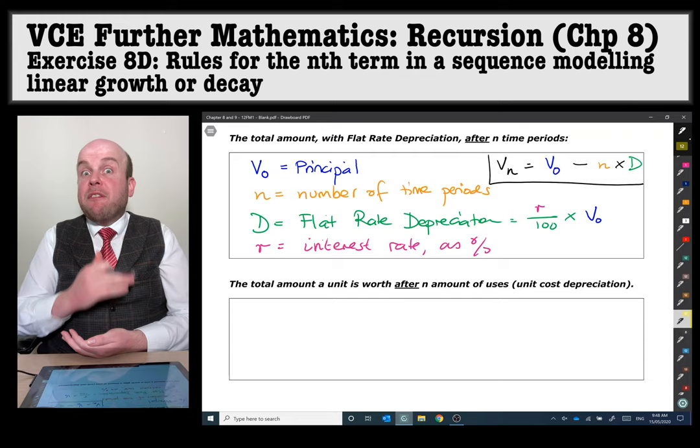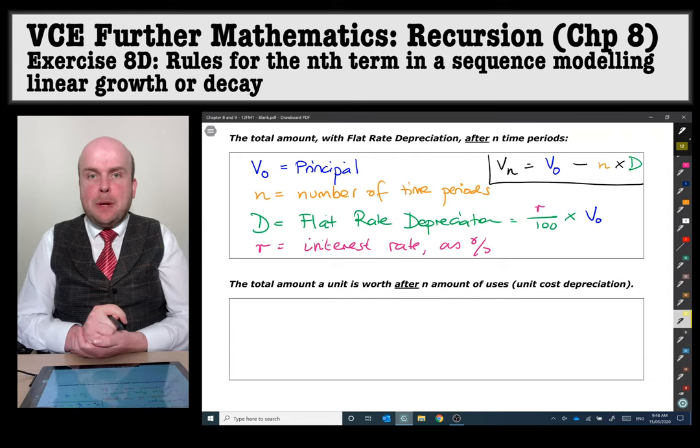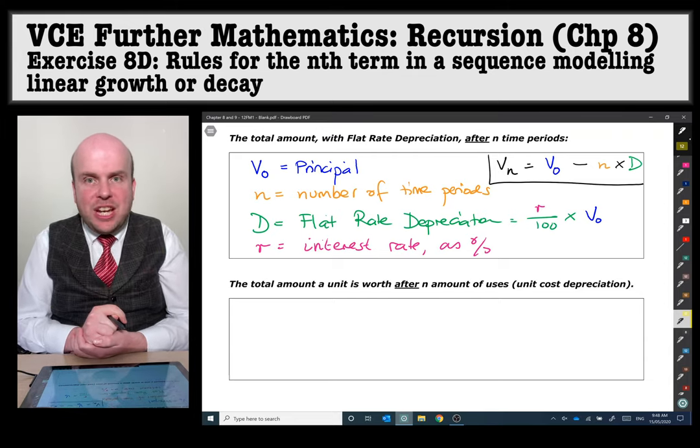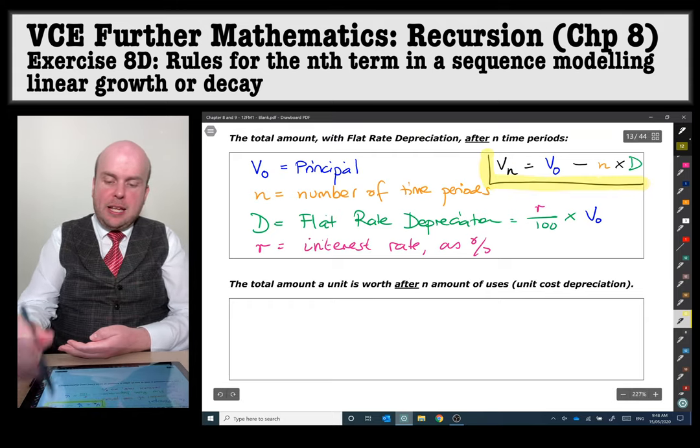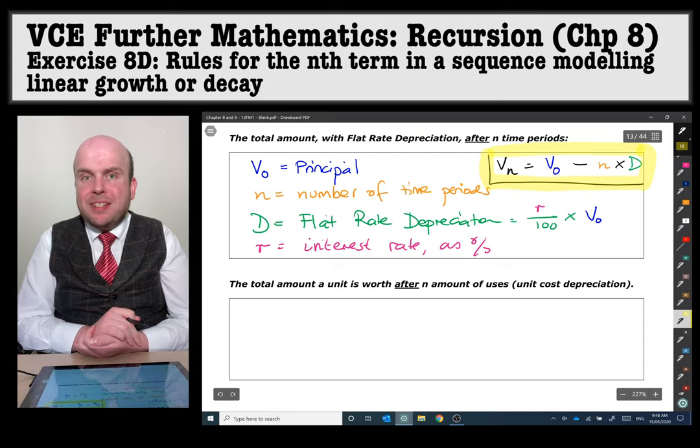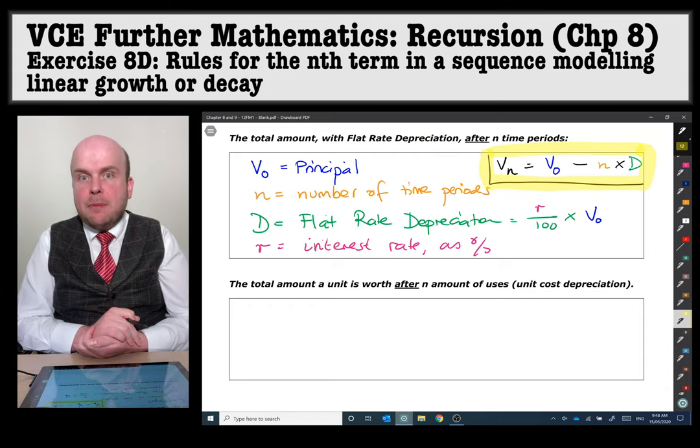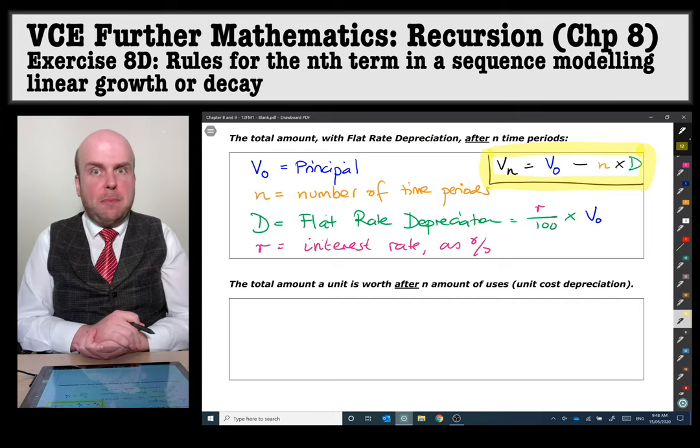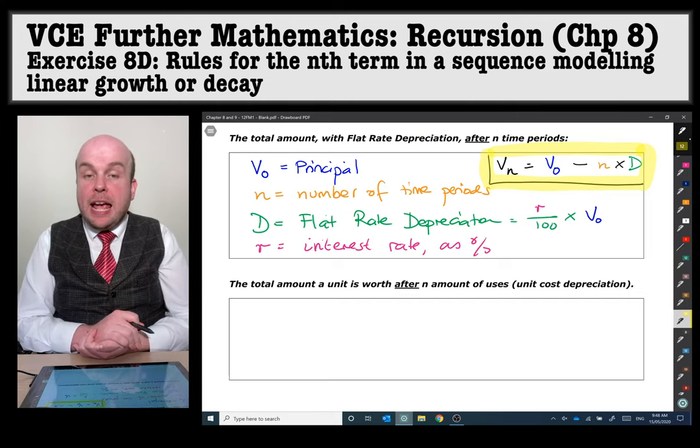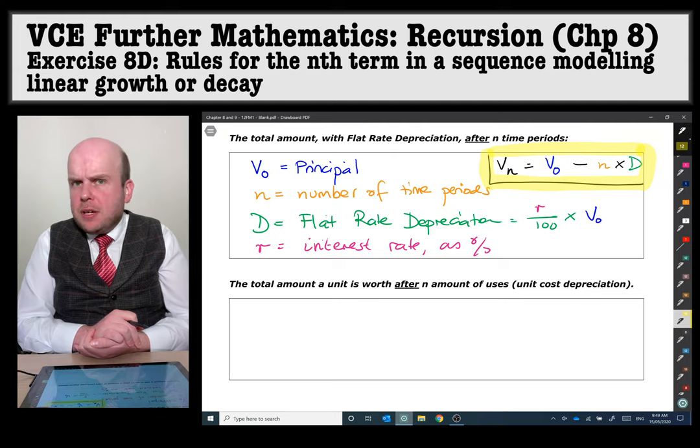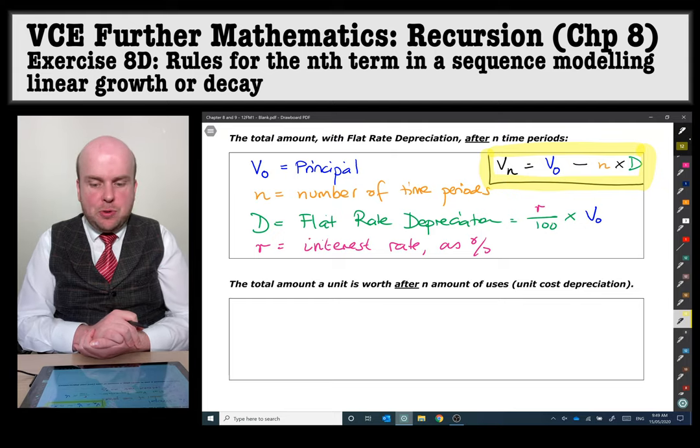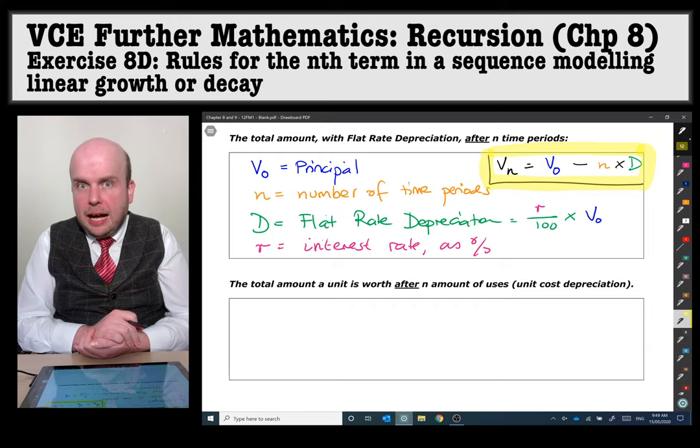The total amount with flat rate depreciation after n time periods. As soon as you see the word depreciation that means I'm taking it away. So you'll see that the formula which I'm highlighting here has got Vn equals V0 take away n times d. The V0 is still the principle, the n is still the time periods, and d however is the flat rate depreciation which is still calculated in the same way, it's still the interest rate divided by 100 times by the principle.